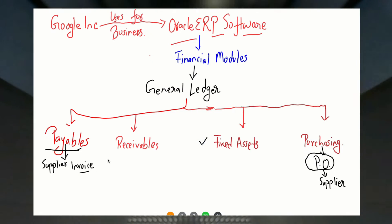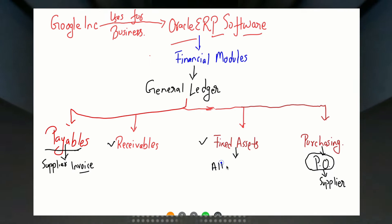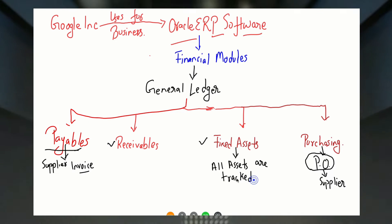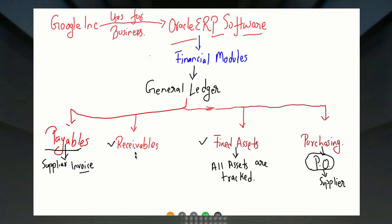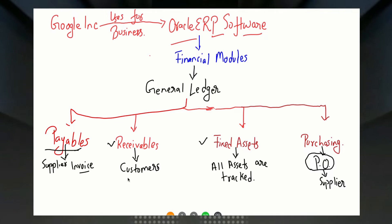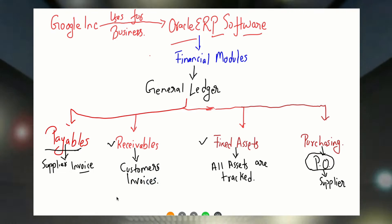Then there is a fixed assets module and a receivables module. In the fixed assets module, all the assets of Google Inc will be captured — that module will track each and every asset of Google Inc. In the receivables module, Google Inc creates its customers and raises invoices on those customers for the services which Google provides.